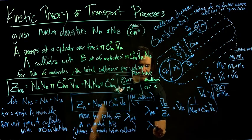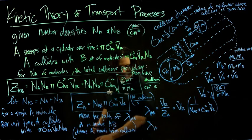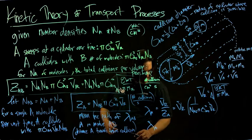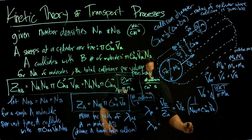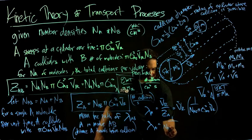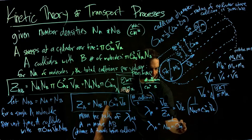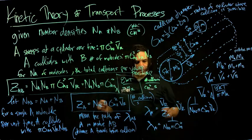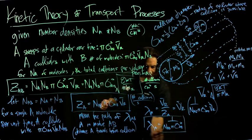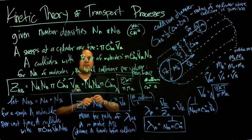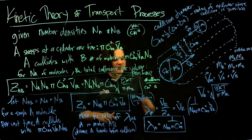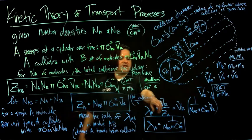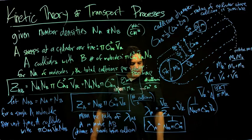The mean free path of A depends on how many particles are in the mix and on the size of these particles.